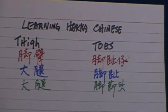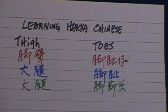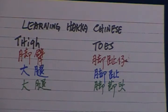In Hakka Chinese is Gio Bi. In Mandarin is Da Tui. And in Shanghainese dialect is Do Te. Gio Bi in Hakka Chinese, Da Tui in Mandarin, Do Te in Shanghainese dialect.